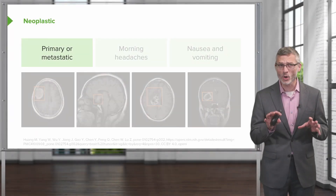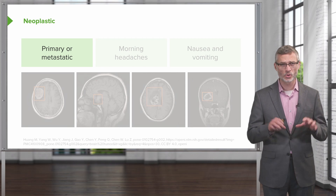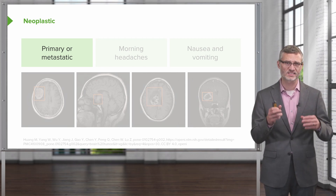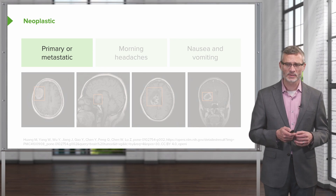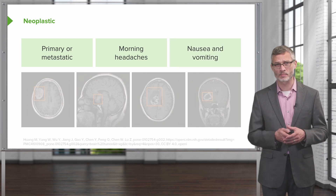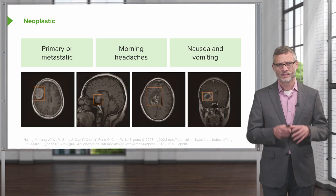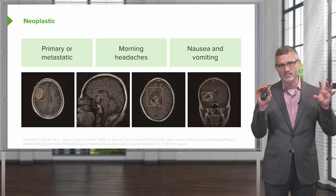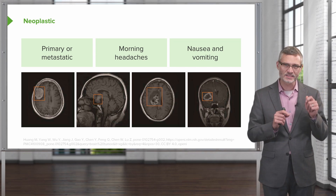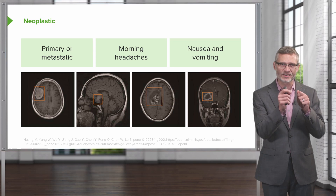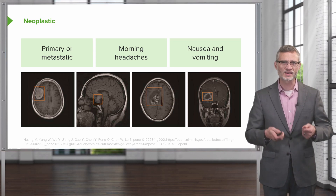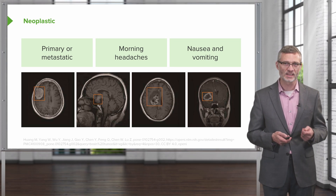In terms of neoplastic causes of headache, the two broad categories are primary cancers and tumors that have metastasized to the brain. Typically, patients with brain tumors will present with morning headaches and possibly nausea and vomiting. Brain tumors can appear anywhere in the brain, and our physical exam will help us hone in on where the abnormality is, enabling us to predict where a lesion might be found on imaging, if necessary.